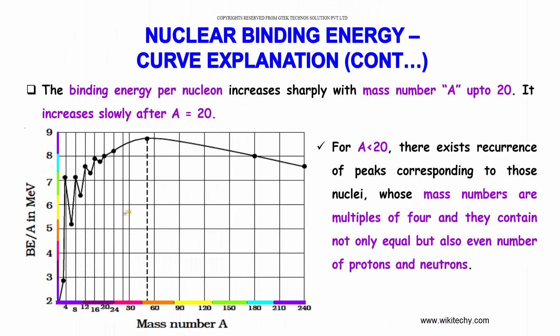The binding energy per nucleon increases sharply with mass number up to 20, and it increases slowly after 20.